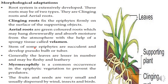Some epiphytes have succulent stems, developing into pseudobulbs or tubers. The leaves are mostly fewer in number and may be fleshy or leathery, with reduced water content. Fruits and seeds are important; they are usually dispersed by wind, insects, and birds.